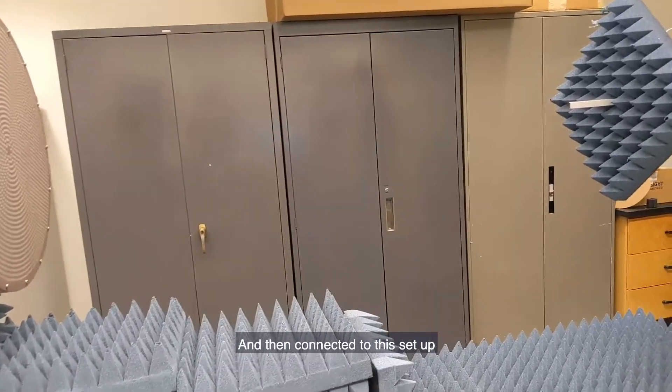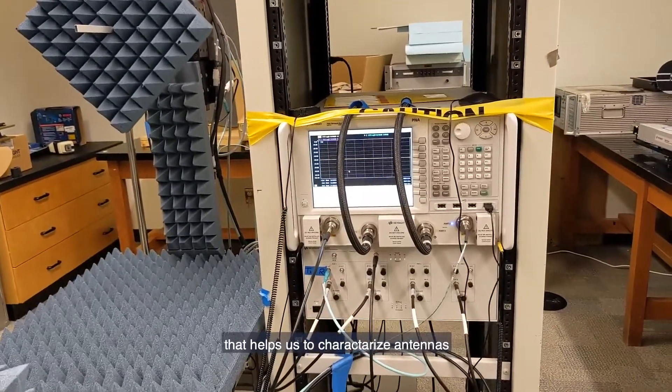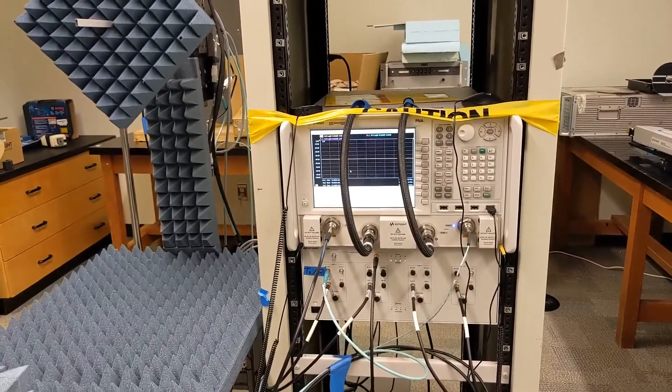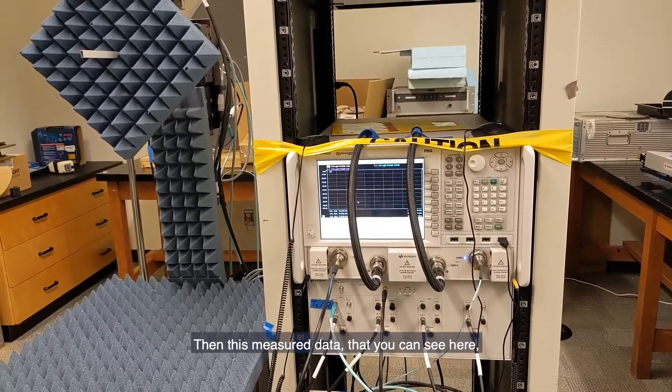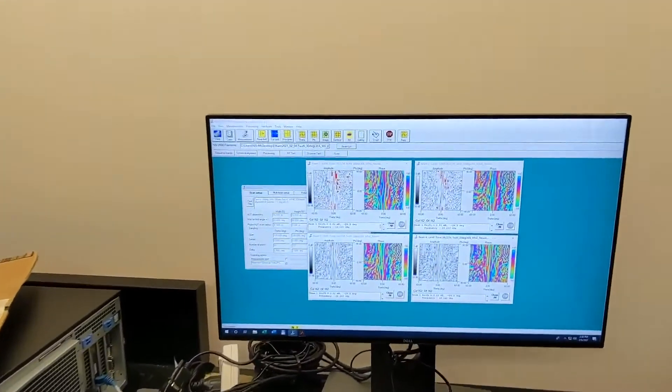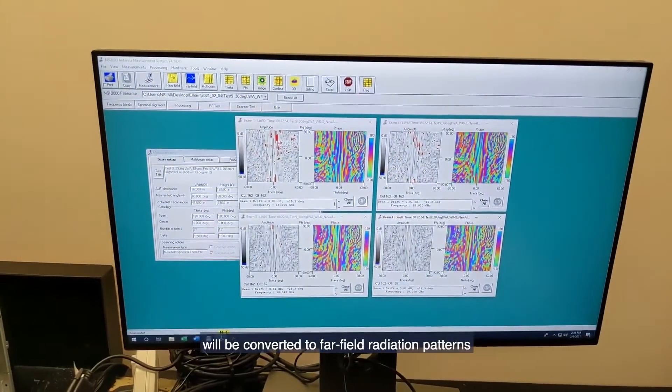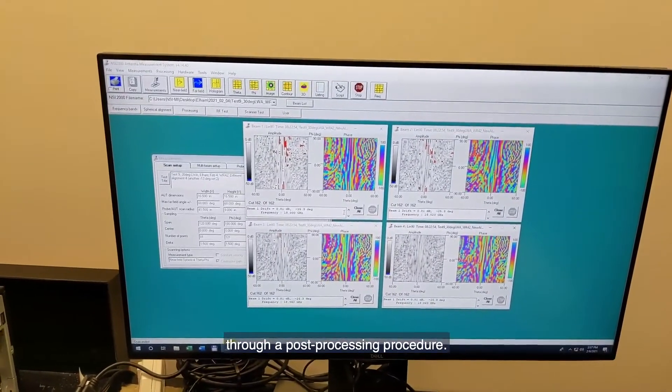And then connected to this setup is a vector network analyzer that helps us to characterize antennas up to 300 gigahertz. Then this measured data that you can see here will be converted to far field radiation patterns through a post-processing procedure.